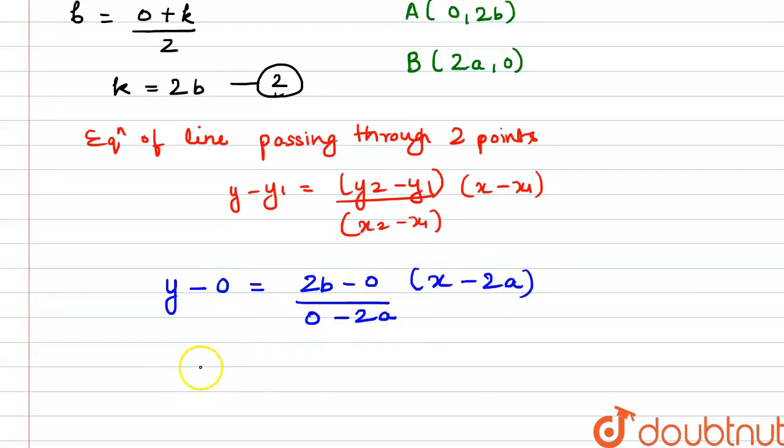So if we solve this, we have y is equal to 2b divided by minus 2a into x minus 2a.